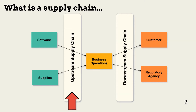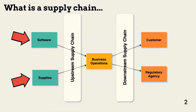Upstream supply chains provide products and services that enable business operation. Upstream connections include materials for manufacturing, supplies for distribution, office supplies, and software maintenance and updates. The upstream supply chain does not stop with immediate suppliers — those suppliers also have connections to their own supply chains, which can result in multiple steps before a product, service, or software is delivered to an organization.